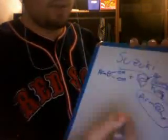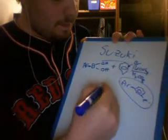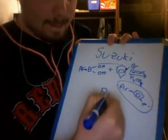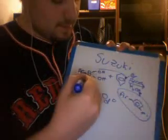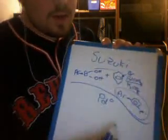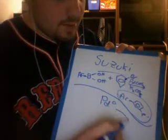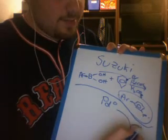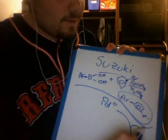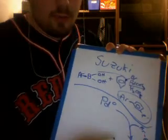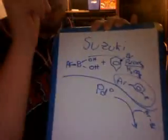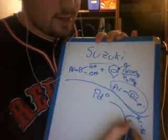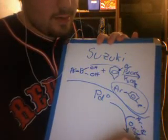Now I'm going to tell you how this works. We start off with palladium zero. The palladium zero reacts with the aryl bromide in a step called oxidative addition.